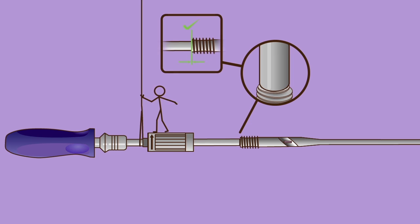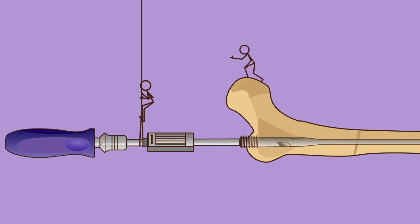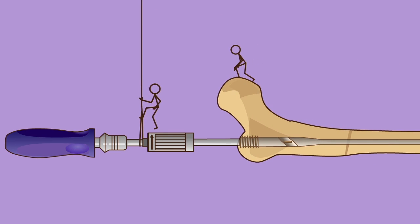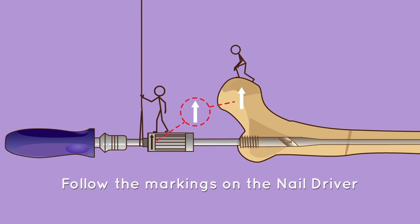Insert the nail into the prepared canal over the guide wire to the desired depth. Nail alignment with femoral neck must be respected. Follow the markings on the nail driver. Remove the guide wire after nail insertion.